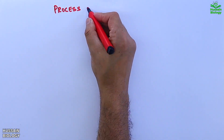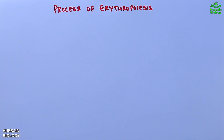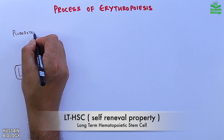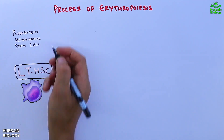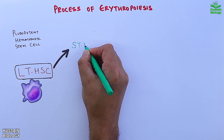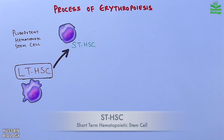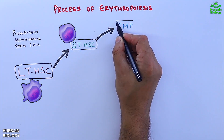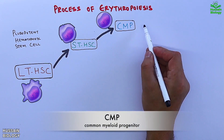Now let's get to the process of erythropoiesis in detail. First we have the LTHSC, which is the long-term hematopoietic stem cell — a class of pluripotent hematopoietic stem cell. It gives rise to STHSC, the short-term hematopoietic stem cell, which in turn gives rise to CMP, the common myeloid progenitor cell.